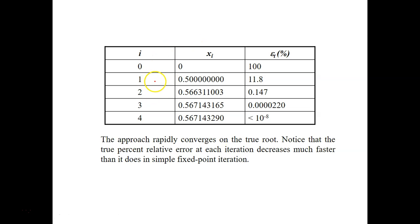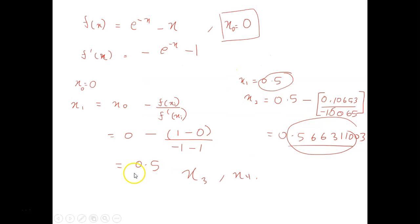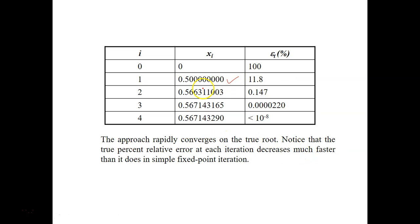Okay. So for this example, they just show you only four iterations. Alright. Four iterations here. We have 0.5. Is it the same? Yes. 0.5. And the 0.566. This is what I showed you previously. And you can calculate for the third and the fourth calculation. So you can see that the approach rapidly converges on the root. Because you can check the true error of the calculation. Of course, the first one is 100% because this is just a wild guess. And then after a while, you can see that the error is reducing and reducing and reducing. So it means that your answer is converging, almost approaching to the true root. This is not true root, but it's almost. Okay. Almost approaching to the true root.